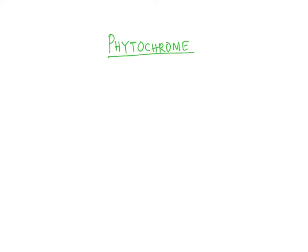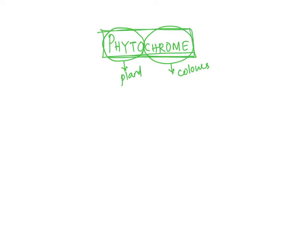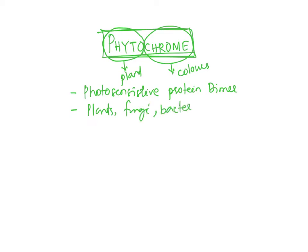We will discuss phytochrome today. Phyto means plant, chrome means colors. These are a type of plant pigments, particularly plant pigments which are sensitive to light. It is a photo-sensitive protein dimer, found not only in plants but also in fungi and bacteria.